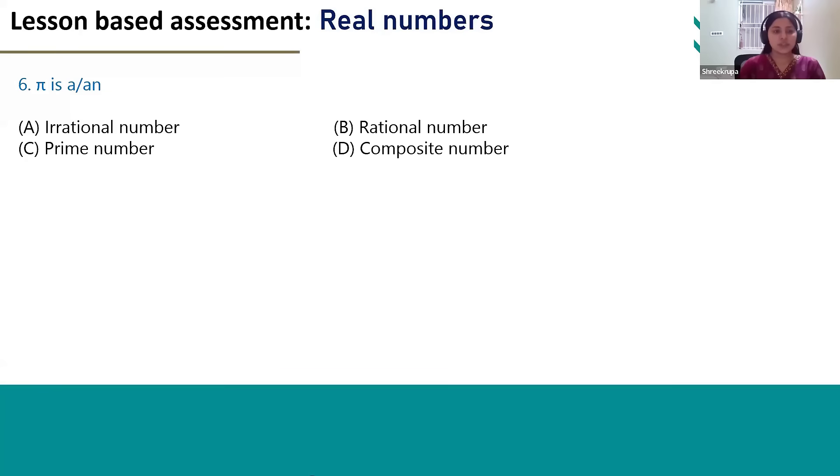So sixth question is pi is a slash an. What is it? Is it an irrational number, rational number, prime number or composite number?